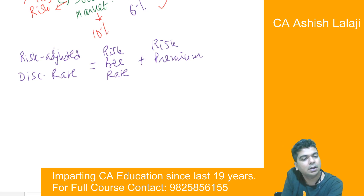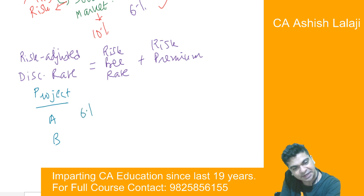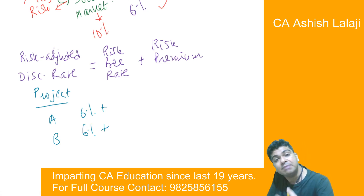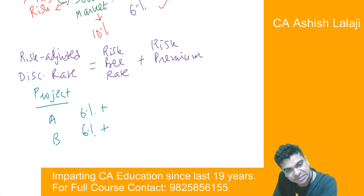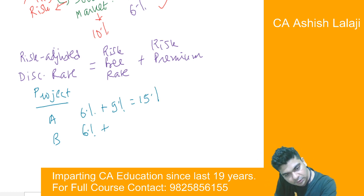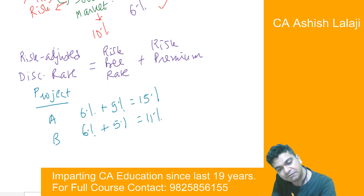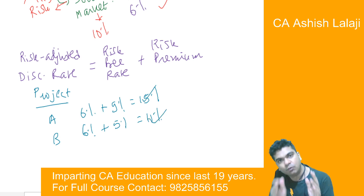Let's take an example. Let us say I am analyzing two projects — Project A and Project B. The risk-free rate is 6%. In Project A, I am perceiving higher risk, so I am considering a higher risk premium of 9%, giving me 15%. In Project B, I am perceiving lower risk, so I consider the risk premium to be 5%, giving me 11%. Whatever are the cash flows of A, I will discount at 15%. Whatever are the cash flows of B, I will discount at 11% and work out the NPV.